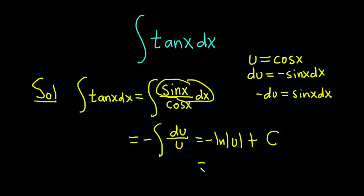But u is cosine x. So this is equal to negative ln absolute value of cosine x plus our constant of integration. And that would be the integral of the tangent of x.